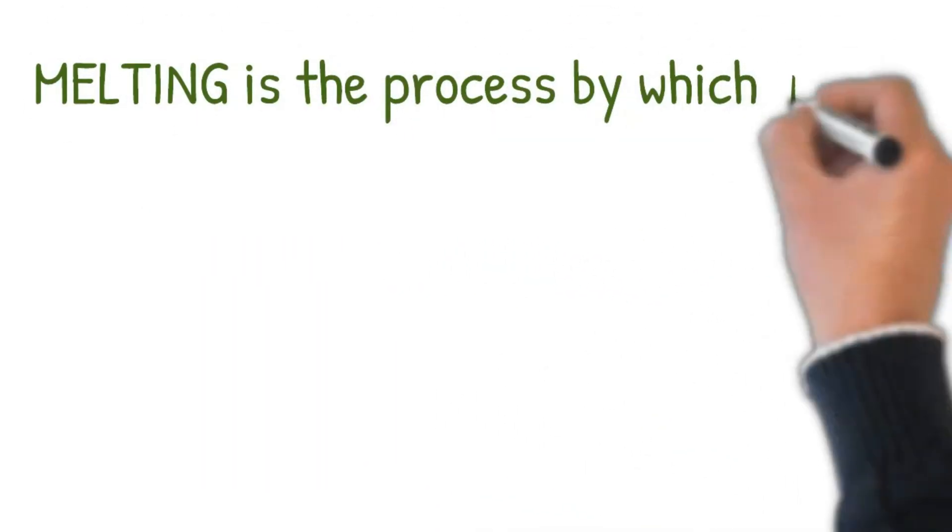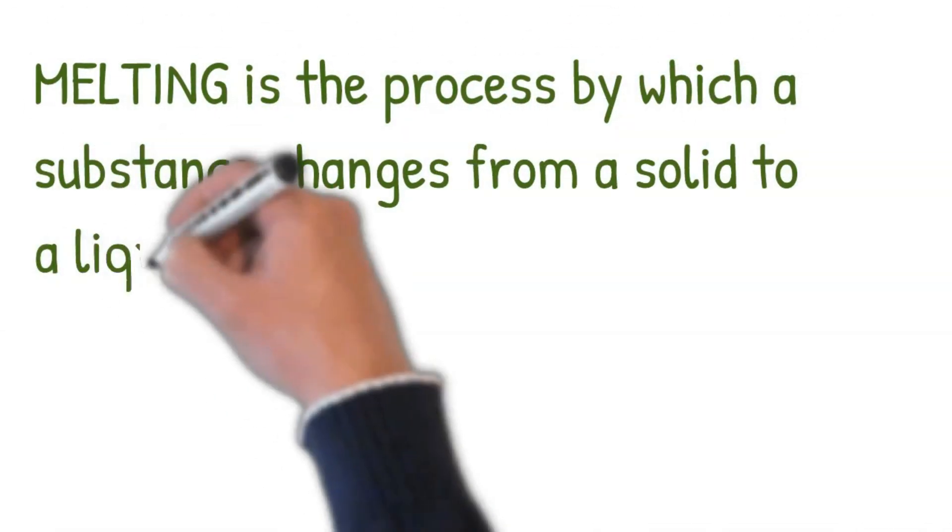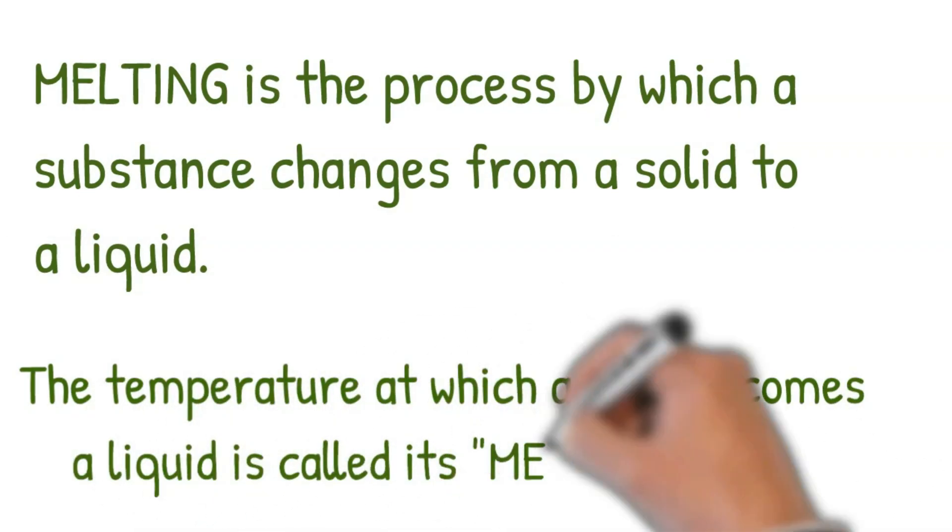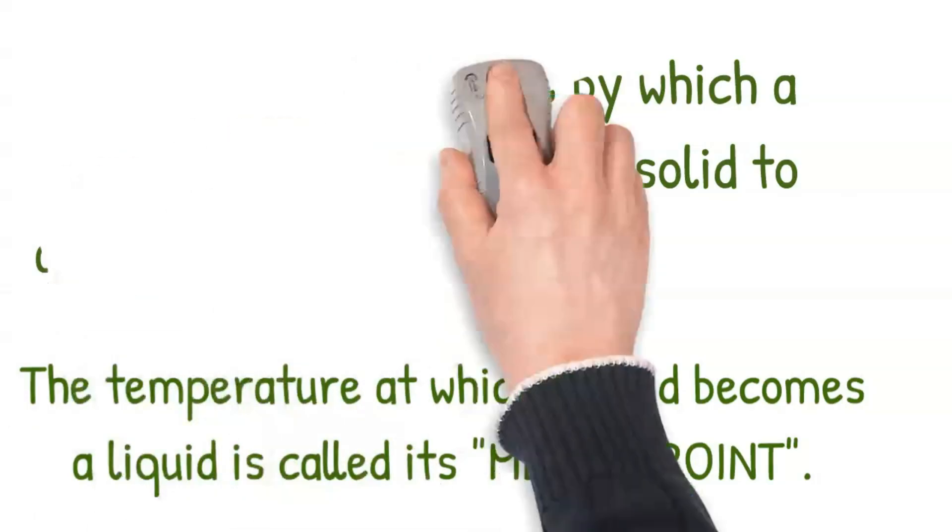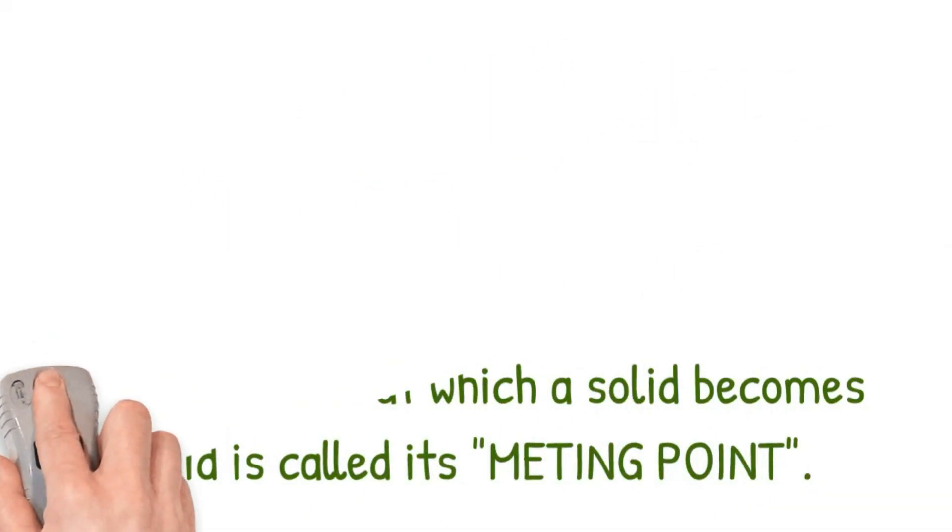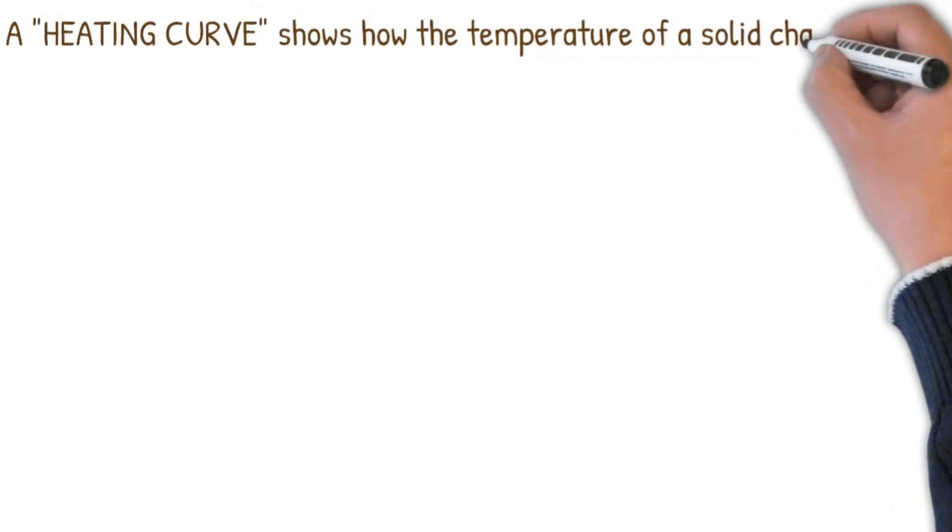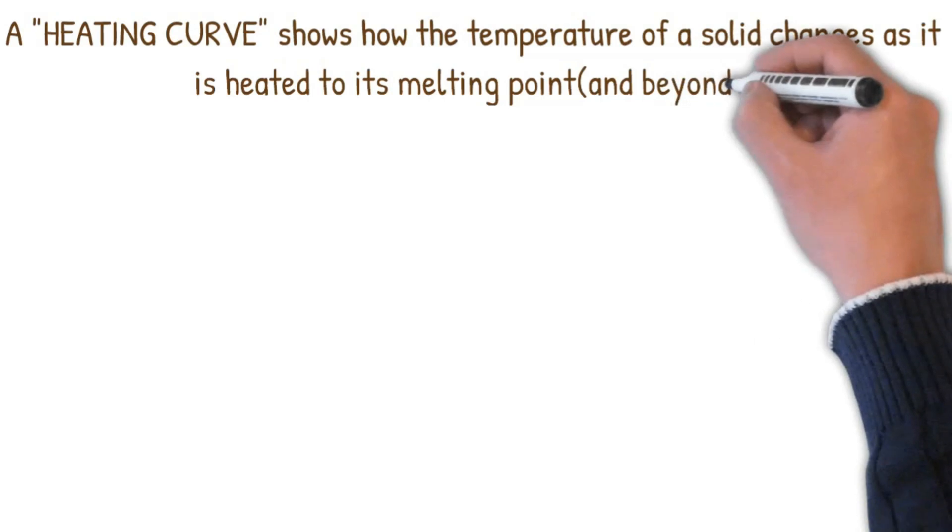Melting is the process by which a substance changes from a solid to a liquid. The temperature at which a solid becomes a liquid is known as its melting point. A heating curve shows how the temperature of a solid changes as it is heated to its melting point and beyond.